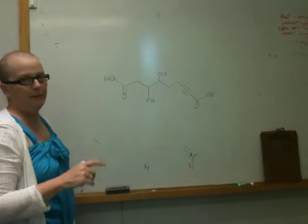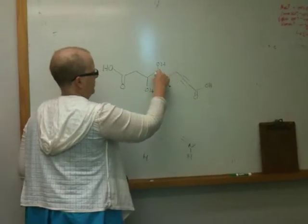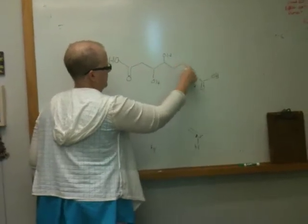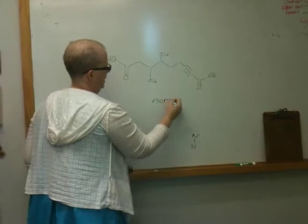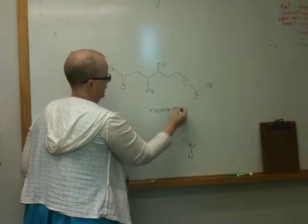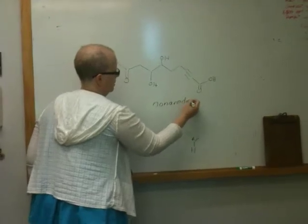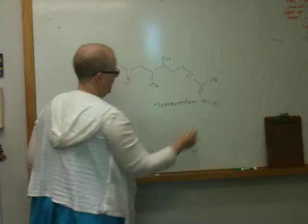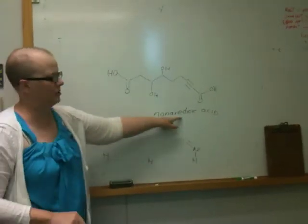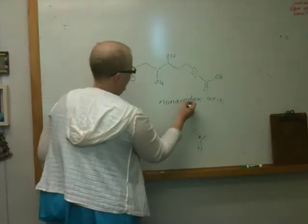So what will the name be? The name is going to be, numbering 1, 2, 3, 4, 5, 6, 7, 8, 9. So it's going to be a nonane dioic acid. Nonane because there's nine carbons, you leave the E in because it's a consonant ending, acid. Now what do you do with the substituents?